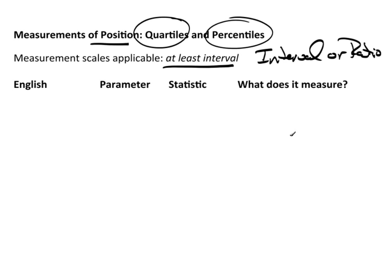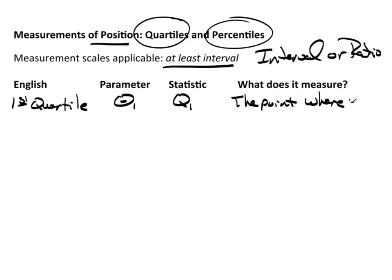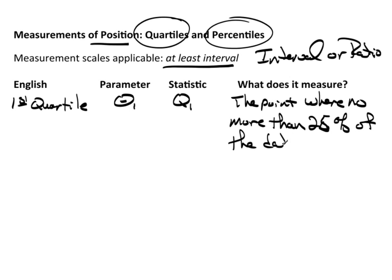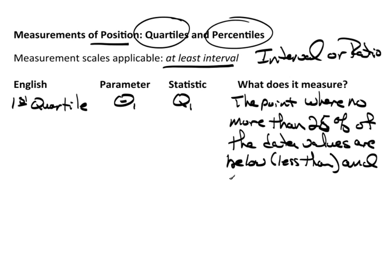There are three quartiles that we typically speak of. The first quartile: the parameter is theta-one, the statistic is Q1, and it measures the point where no more than 25 percent of the data values are below or less than, and no more than 75 percent above or greater than.